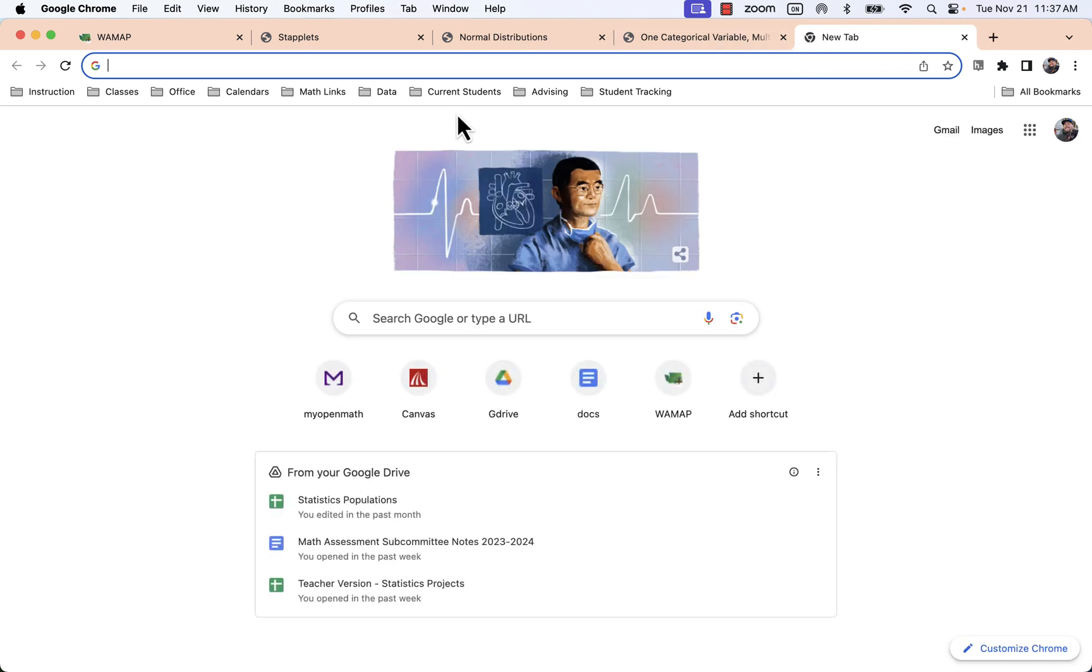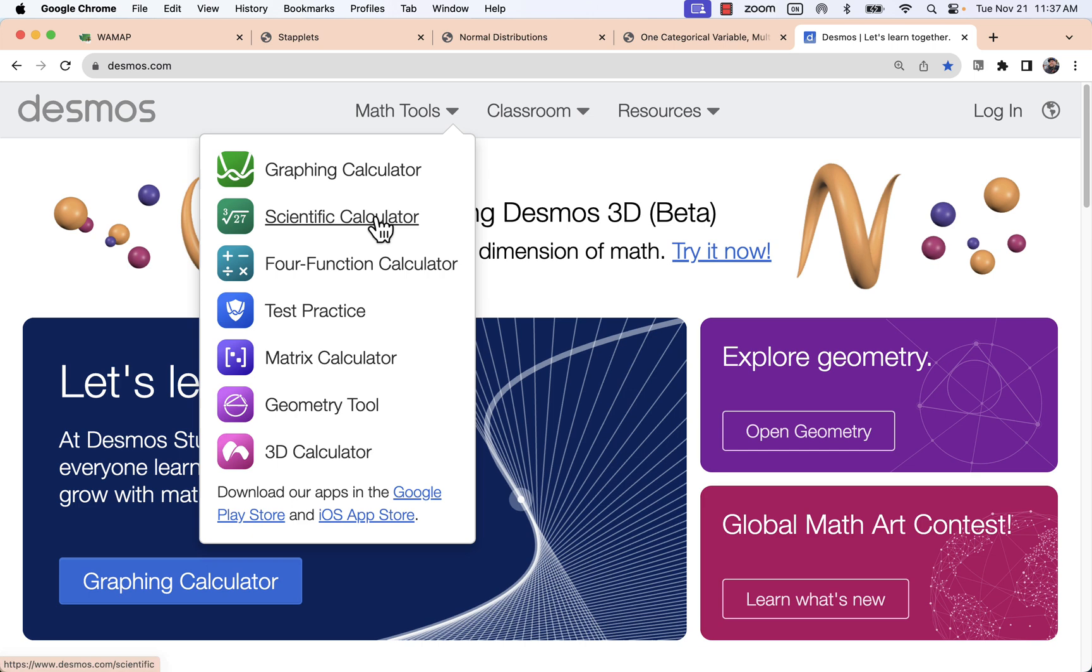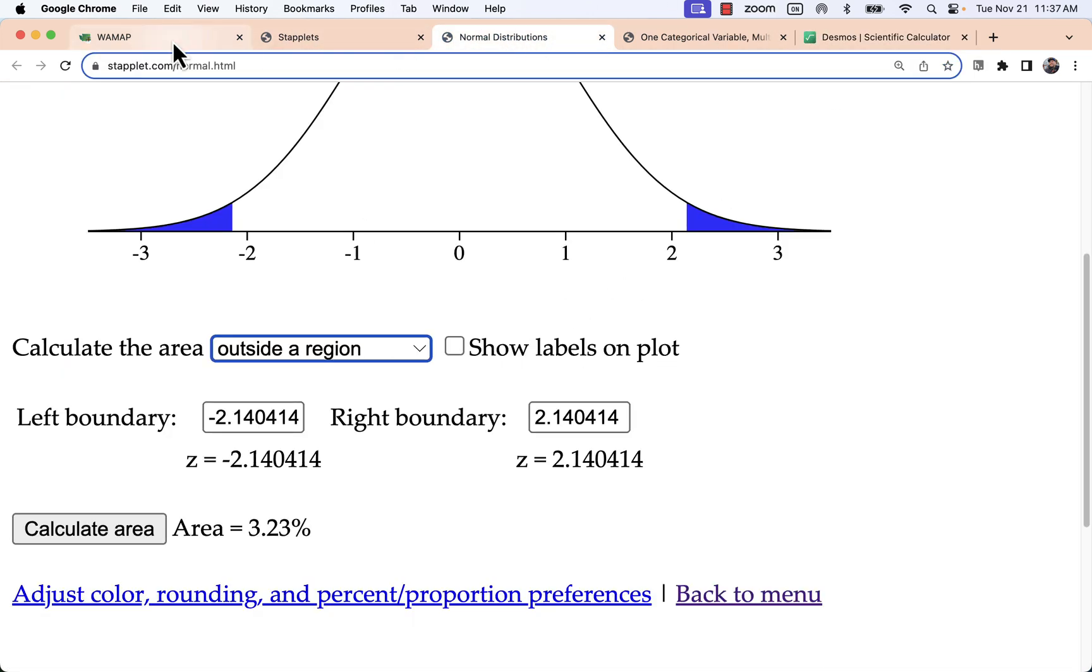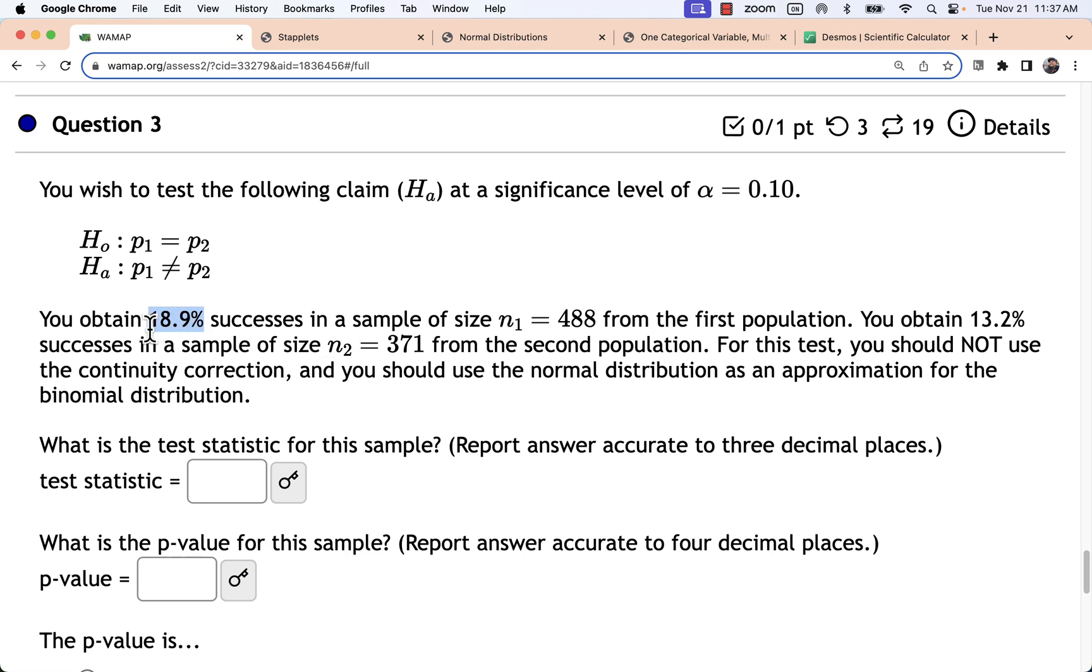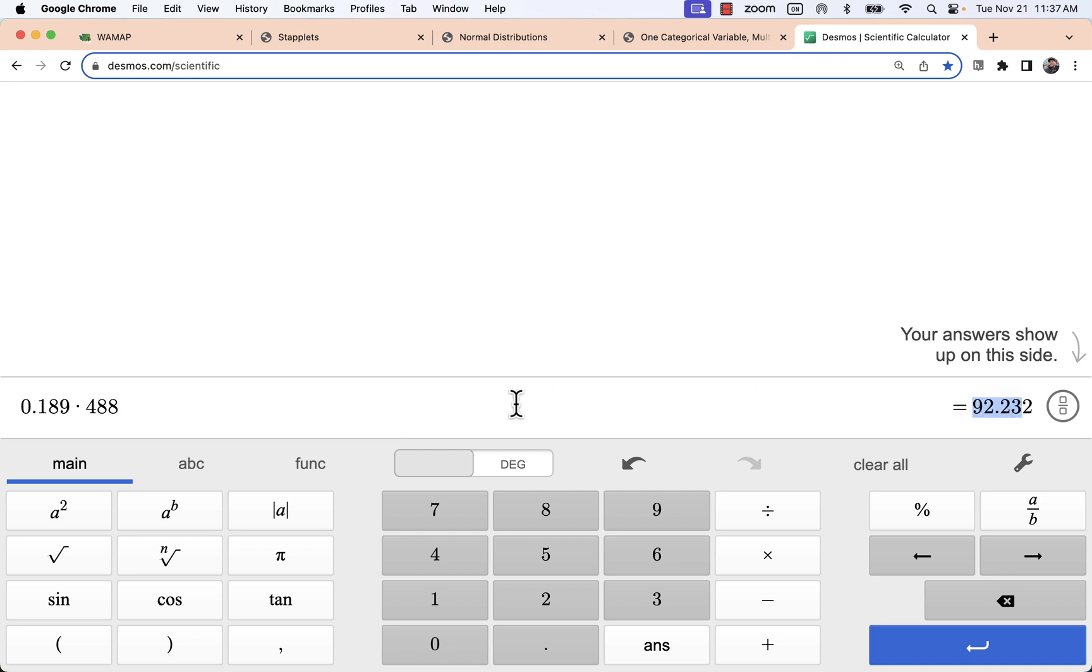So what we would do on this problem is we'd go to a calculator. For example I can go to this Desmos Scientific Calculator. And I will multiply my percentage as a decimal, 0.189 times n. 0.189 times 488. This is not a whole number. But if we consider that the decimal percentage over here was probably rounded then that means we won't get exactly a whole number over here. This is actually 92.